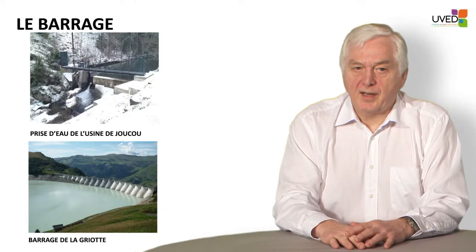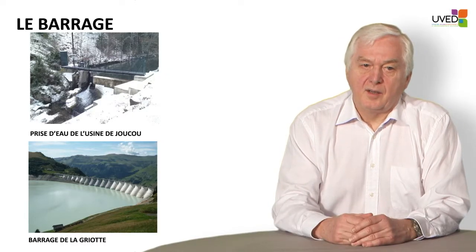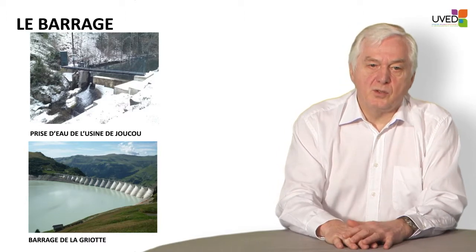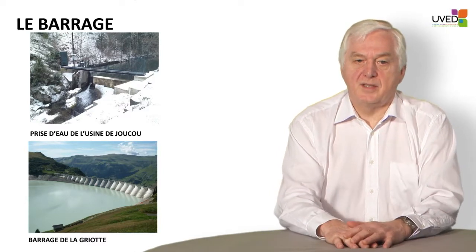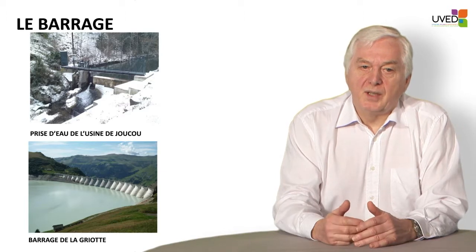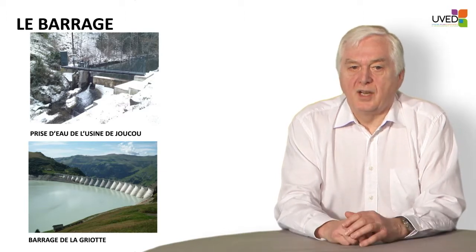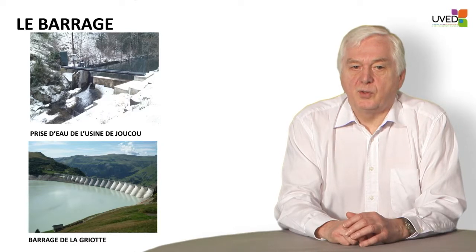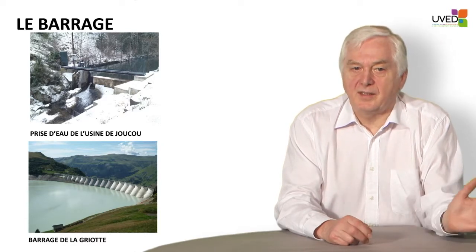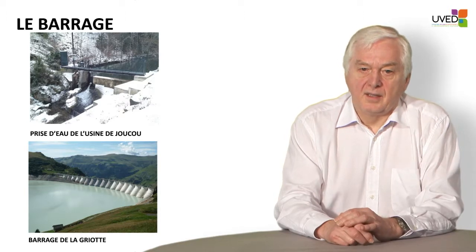If we look more closely at the system, we see the dam which is across the river. There could be a very small dam here — for instance, the Juku Dam, a wall of less than two meters in height. But on the right-hand side, so the left side of the picture, there is a gallery going straight into the mountain to feed the power plant.